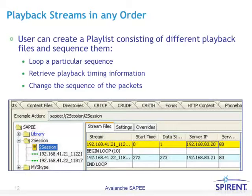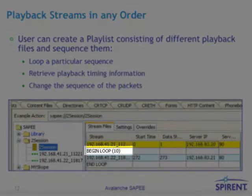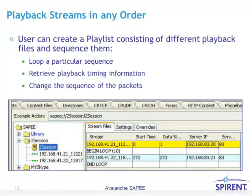A user can create a playlist consisting of different playback files and sequence them. You can use a loop, retrieve playback timing information, and change the sequence of packets. If you do use a loop, please note that there is no conditional processing within this environment, meaning that you can loop something a set number of times — for example, ten times — but you cannot loop until a condition is met.